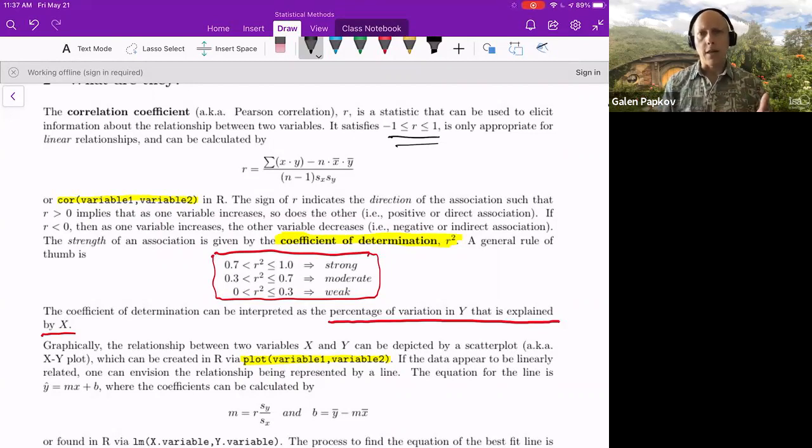Whereas if it's a negative sign, it implies a negative, an indirect or decreasing relationship. Again, you only need one of those terms, but it's good to know that you've got options. The strength of the relationship, though, is determined by r squared. So you want to look at the square of your correlation coefficient. And that's in the middle here. That's called the coefficient of determination.